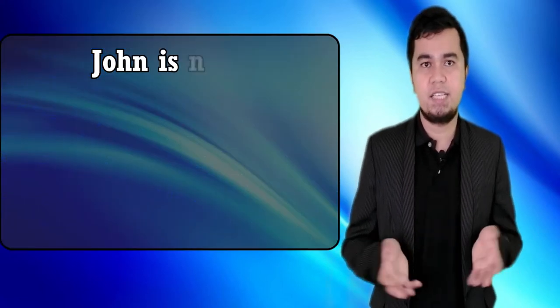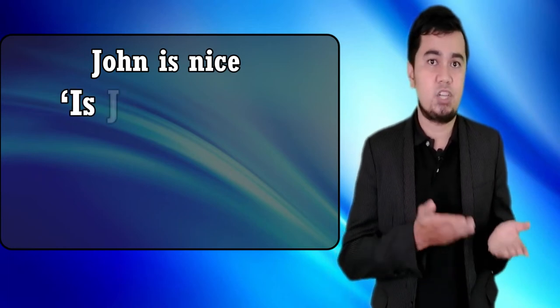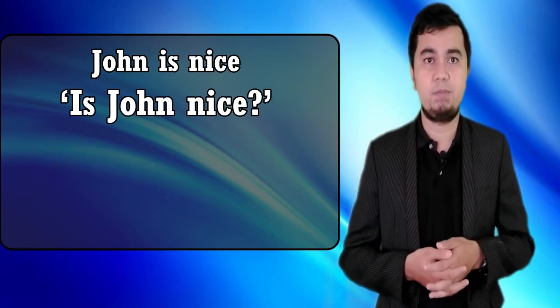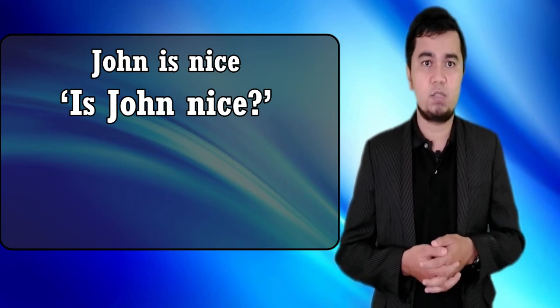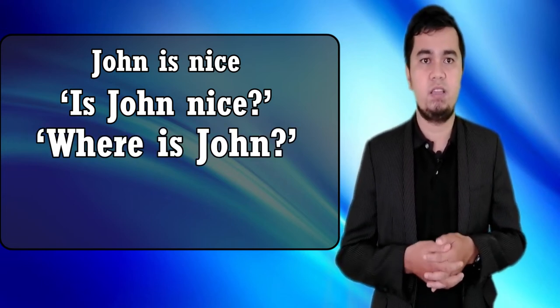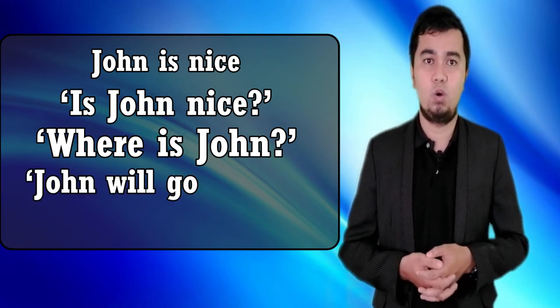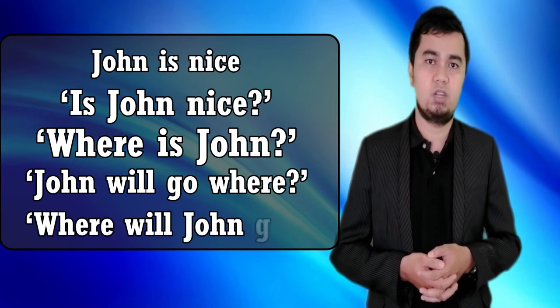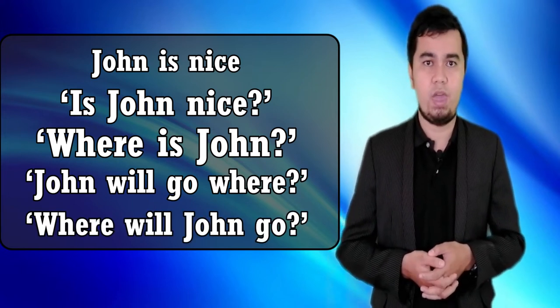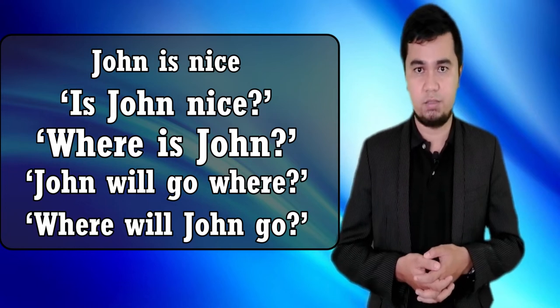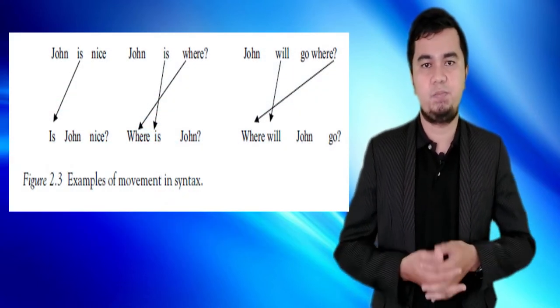English questions, for example, move the auxiliary or question word to the beginning of the sentence — a familiar idea to language teachers. So 'John is nice' becomes 'Is John nice?' by moving 'is' to the beginning. 'John is where?' becomes 'Where is John?' by moving first 'where' then 'is.' And 'John will go where?' becomes 'Where will John go?' by moving both 'where' and 'will' in front of 'John,' as you can see on the screen.